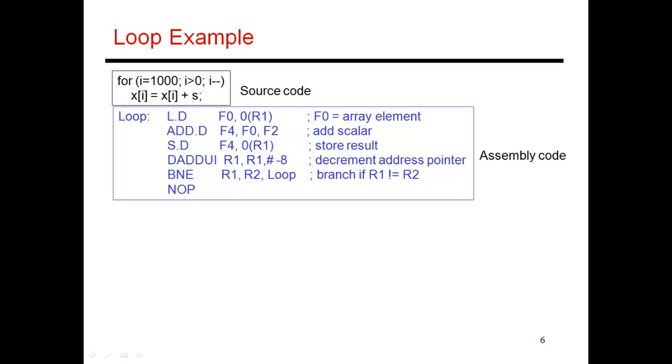So here's our first example. This is the C source code I'm showing in the black lettering over here. What you're doing is going through an array, essentially going from array element x[1000] down to array element x[1]. And for each of those elements, I'm just going to increment the value by a given scalar, which in this case happens to be a floating point value. So it's a very simple loop written in C. That translates into this assembly code that I'm showing in blue. The first thing I do is I need to bring in array element x[i] into a register, in this case a floating point register called F0. So that's what is happening with this load.